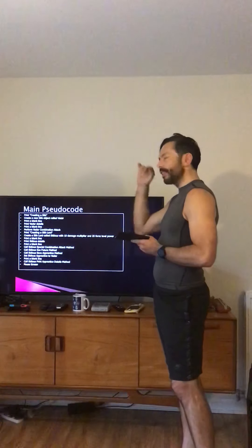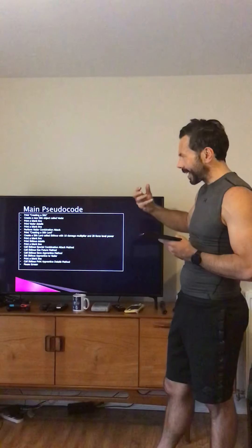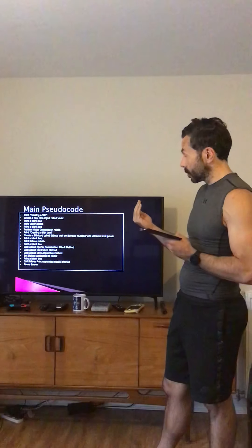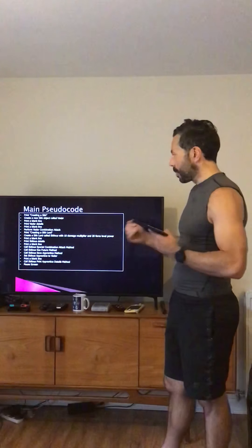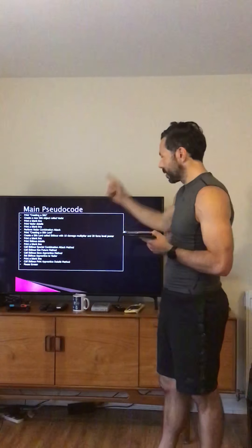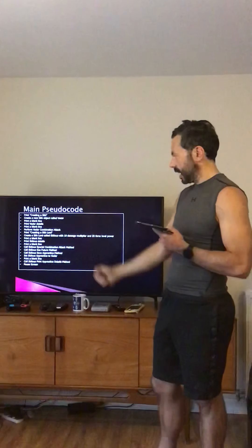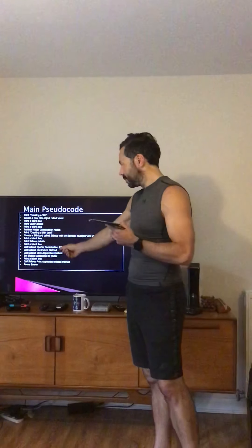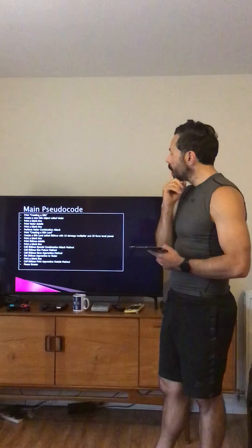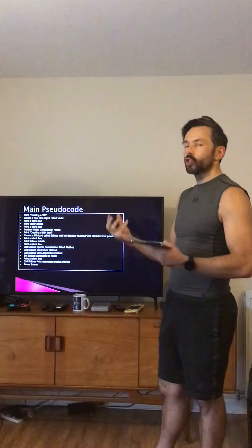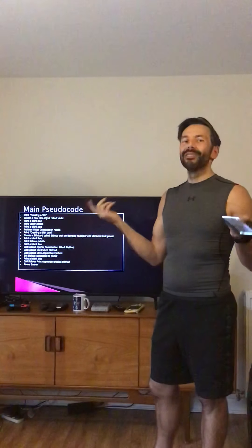The main pseudocode: create a Sith object called Vader, print a blank line, print Vader's details, print a blank line, perform Vader's combination attack. Then print 'Creating a Sith Lord', create a SithLord called Sidious with damage 10, multiplier 10, and force power level 20, print a blank line, print Sidious's details, call Sidious special combination attack, call Sidious see future, call Sidious save apprentice, and set Sidious's apprentice to Vader. Then print a blank line and call Sidious print apprentice details — which should print Vader's details. It's all outlined in the lab sheets.